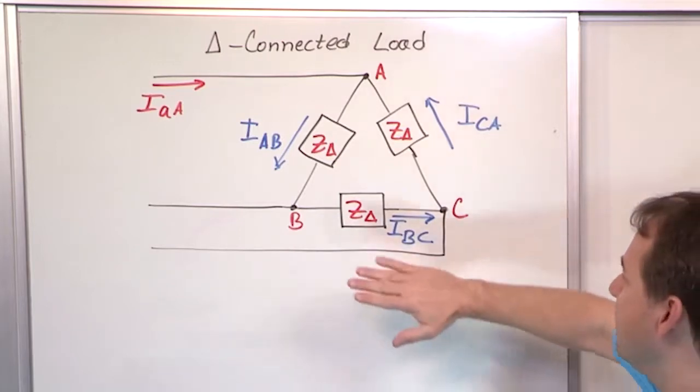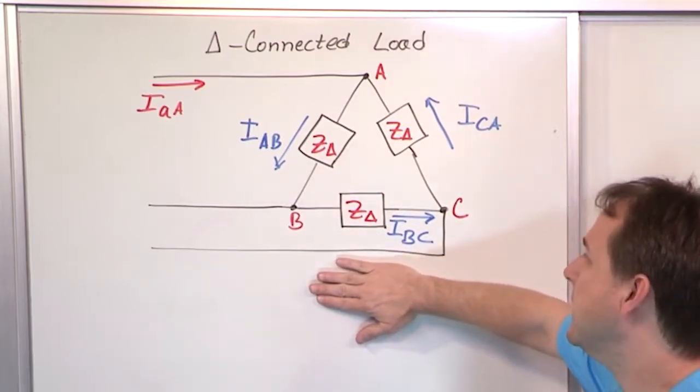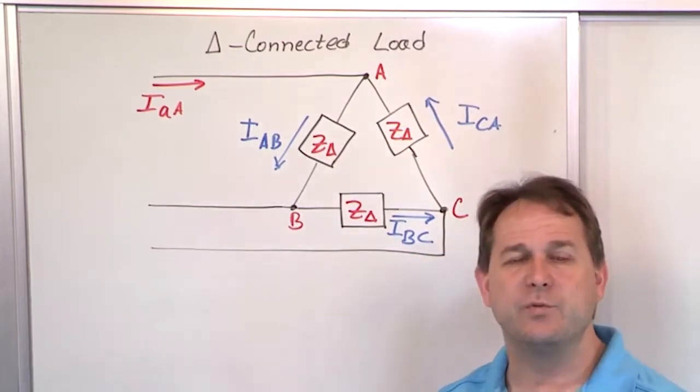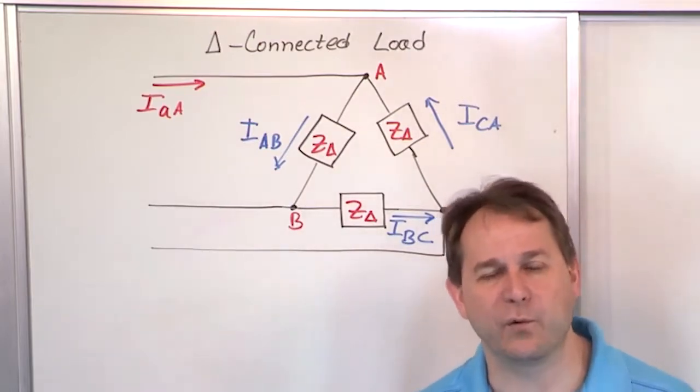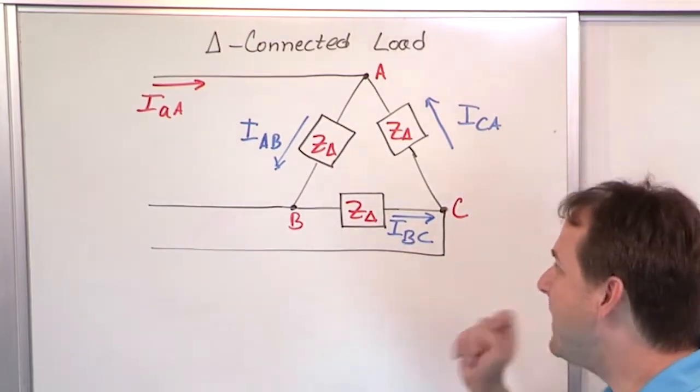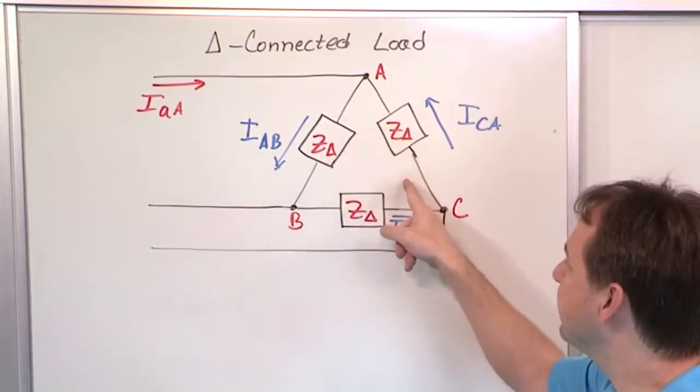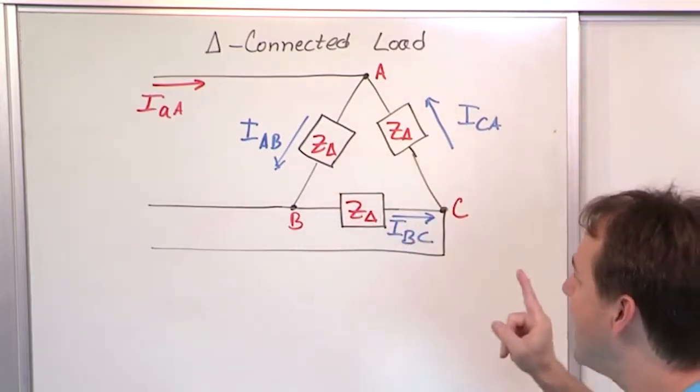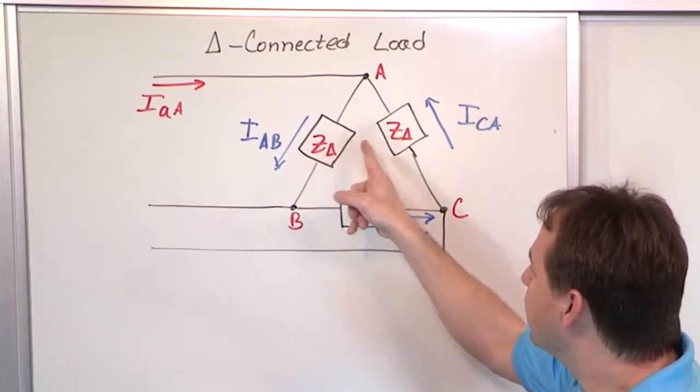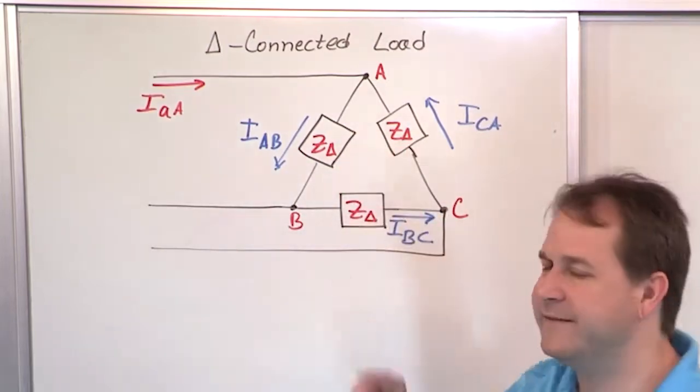Now ultimately, the trick to all of these problems is you want to take your delta load, and I've said it a few times now, you want to transform it. There's a way to transform it into a Y load, and that transformation from delta to Y is very simple, assuming the circuit is balanced. Now this circuit is balanced because at the load end, Z delta, Z delta, Z delta, they're all labeled the same. That means that these loads arranged in this triangle formation, they're all the same.